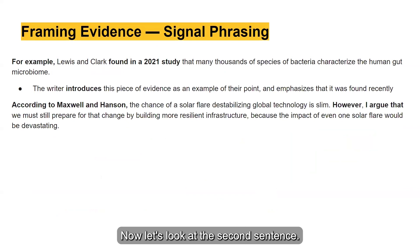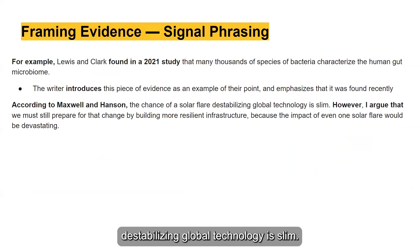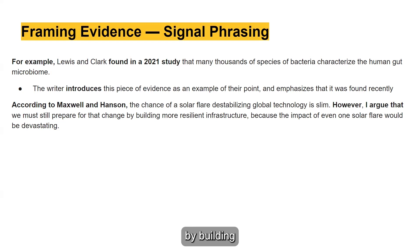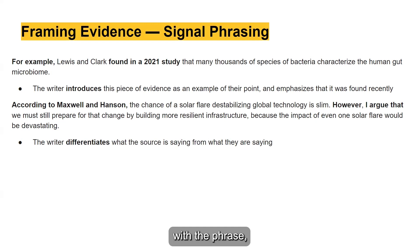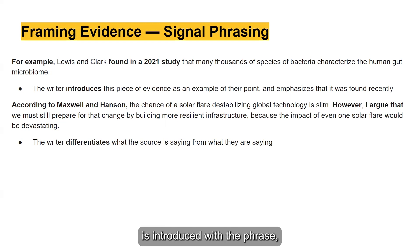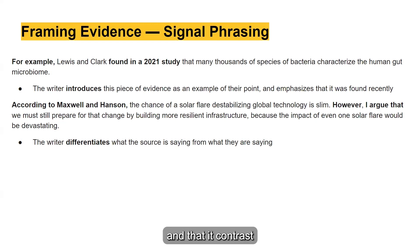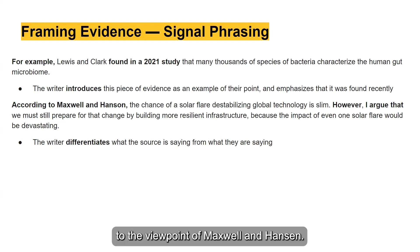Now let's look at the second sentence: "According to Maxwell and Hansen, the chance of a solar flare destabilizing global technology is slim. However, I argue that we must still prepare for that change by building more resilient infrastructure, because the impact of even one solar flare would be devastating." The writer uses signal phrasing to differentiate what the source says from what they are saying — "According to Maxwell and Hansen" versus "However, I argue that" — showing the author's contrasting viewpoint.